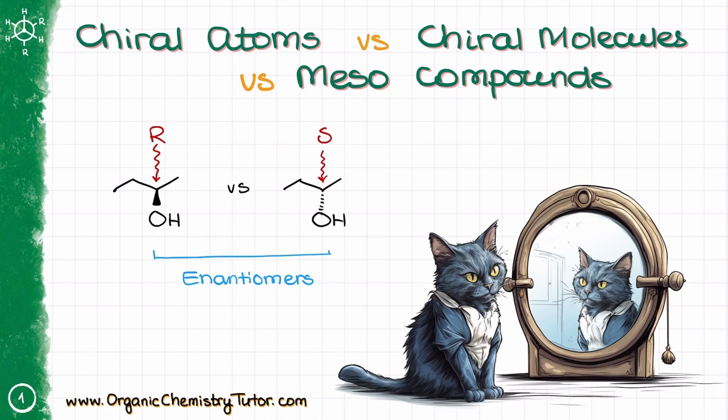First, a definition. A chiral object is an object that has a non-superimposable mirror image. It can be anything from a macro object, such as a garden snail shell or your hands, to a micro object like a molecule or even an atom. So just like your hands, molecules can be chiral too.